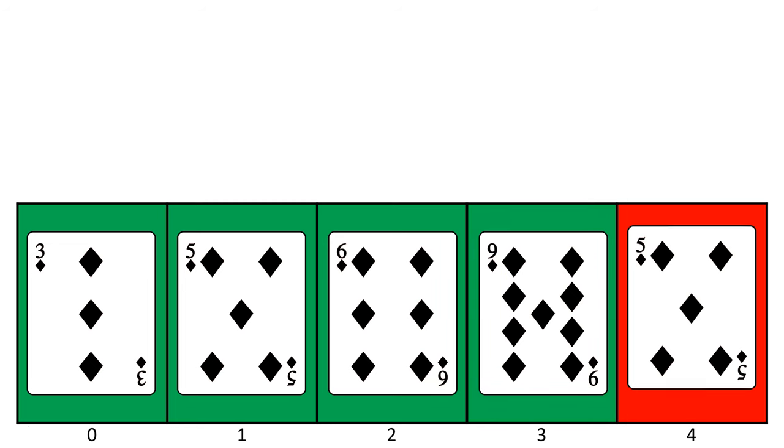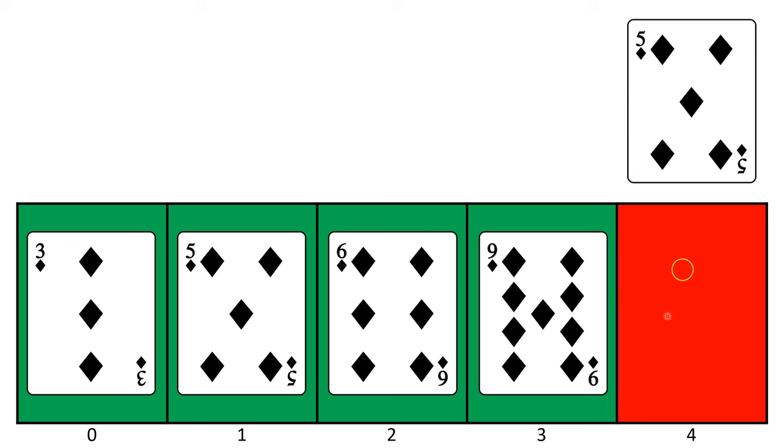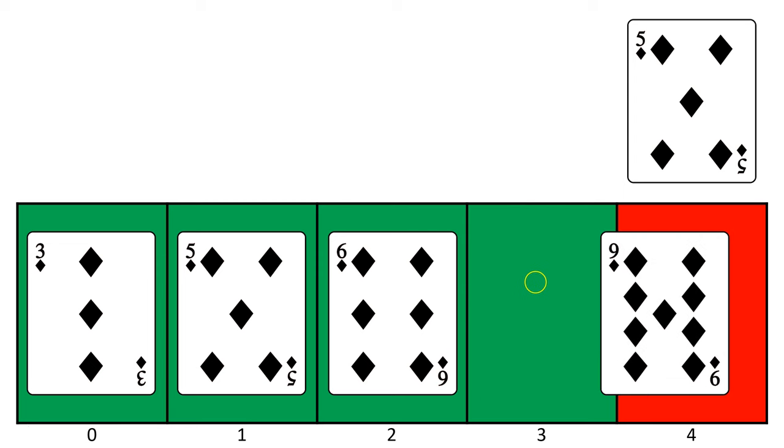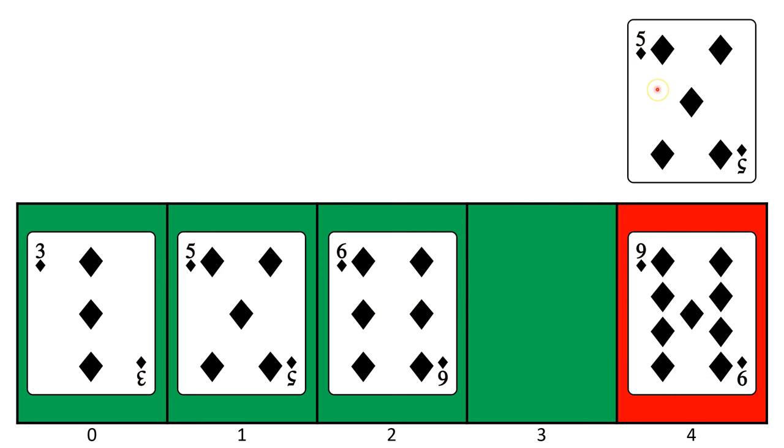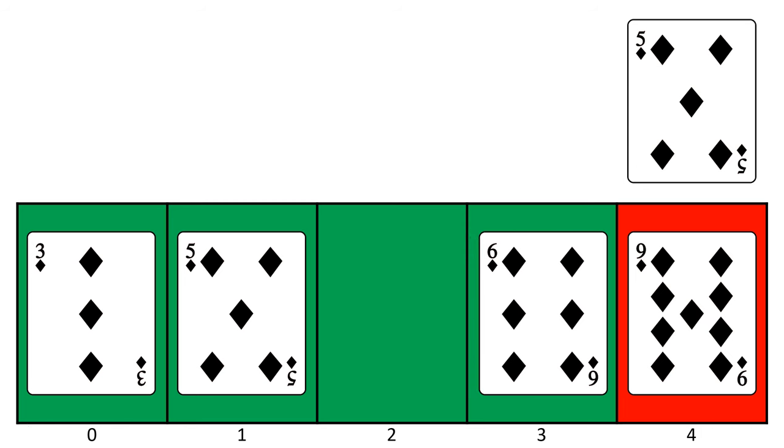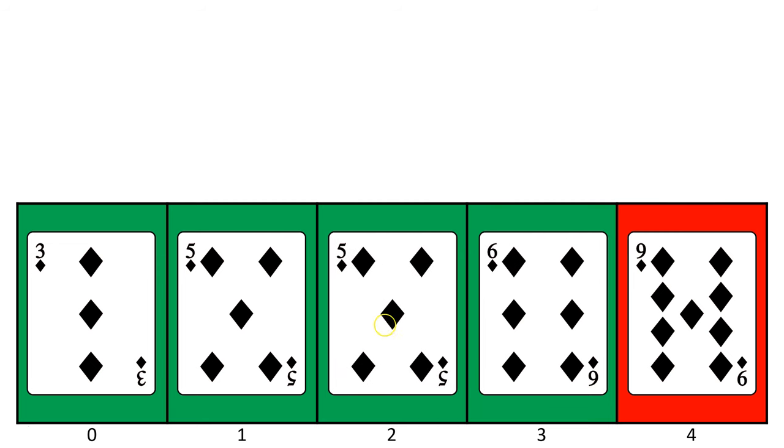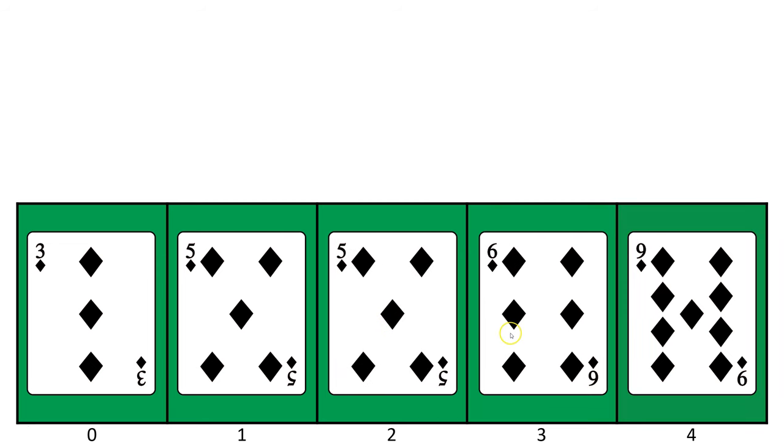Finally, we pull out the 5 in index 4. We compare it to the number to the left of it, 9. We see 5 is smaller than 9, so we slide the 9 down. Now we compare 5 to the next number to the left. We see 5 is smaller than 6, so we slide the 6 down. Next, we compare the 5 to the next number to the left of it. We see this 5 is not smaller than this 5, so we insert this 5 into the empty space. Now we have sorted the entire list.